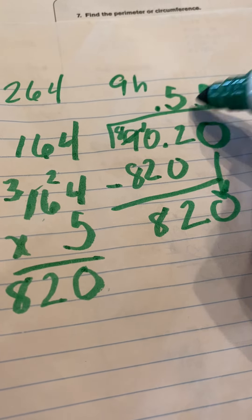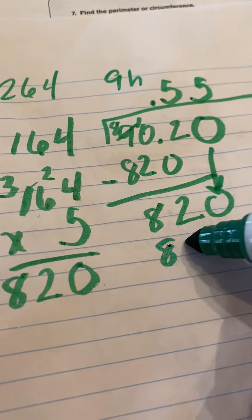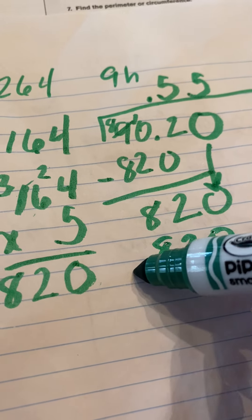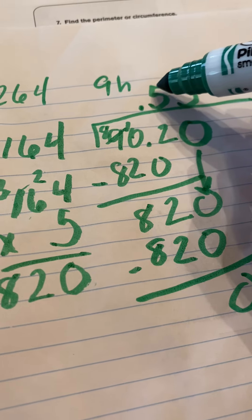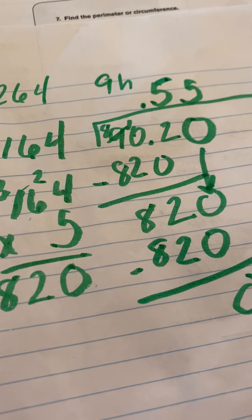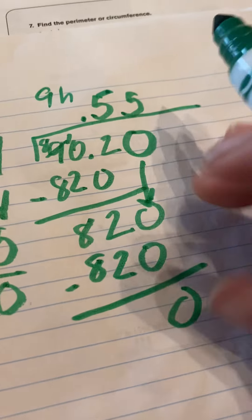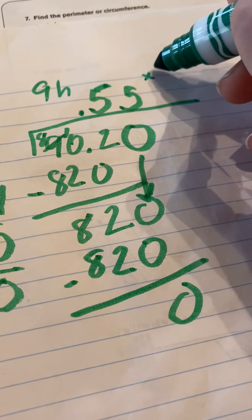820. Looks familiar. So we know that another 5 goes here. And now, our division problem is complete.